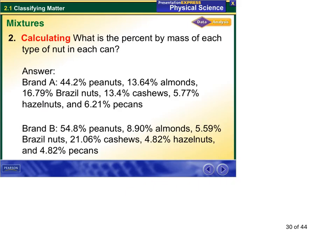And we'd repeat that with each one. And we do get these values here. There's 44.2% peanuts, 13.64% almonds, and the rest of it.